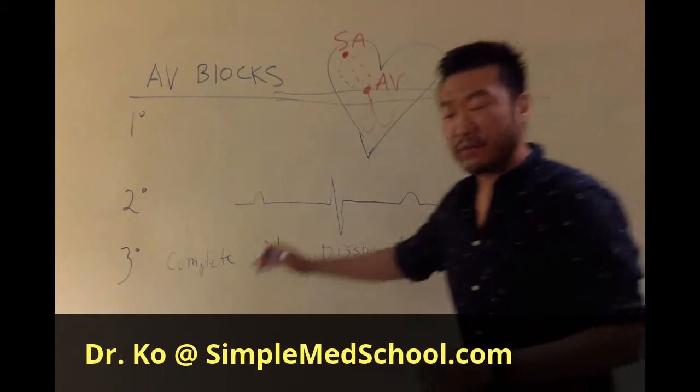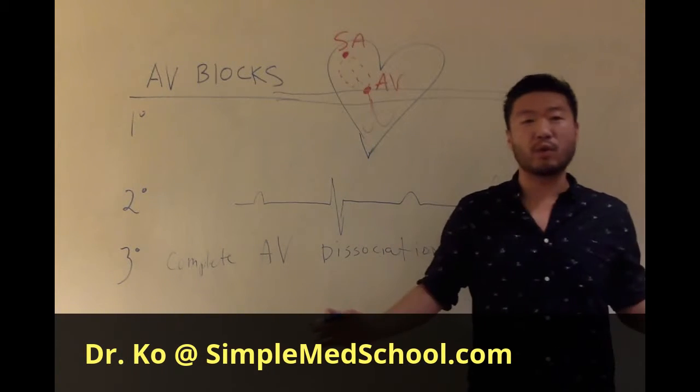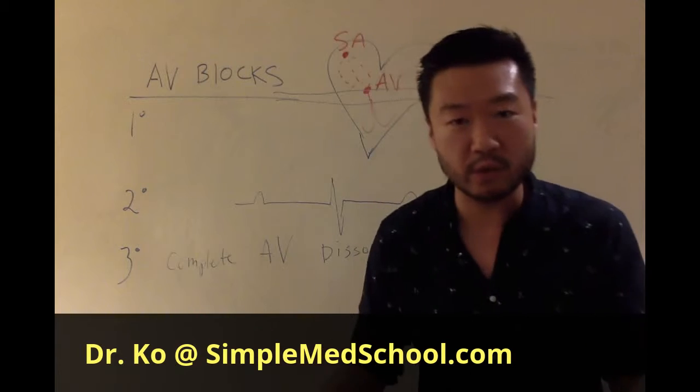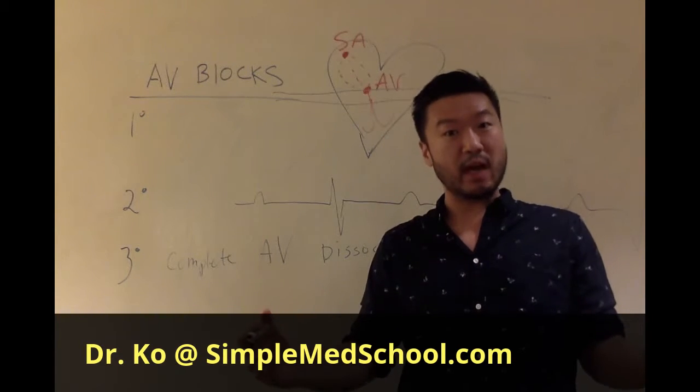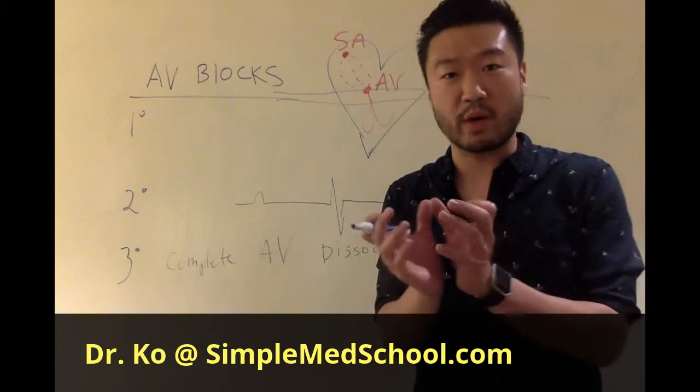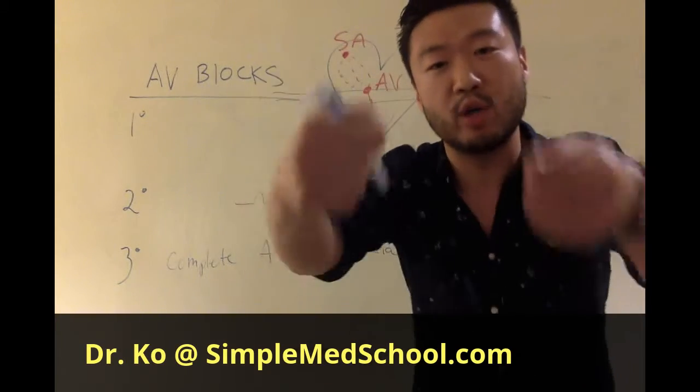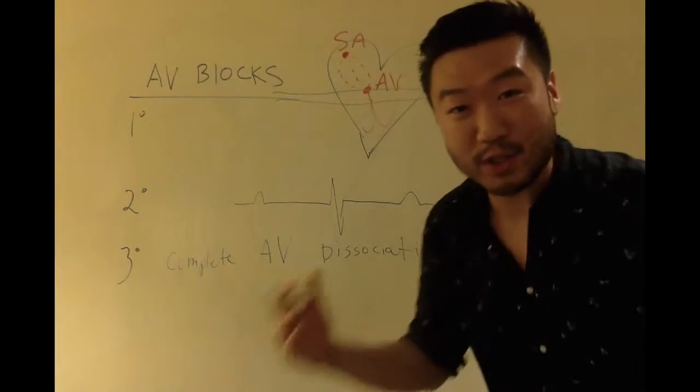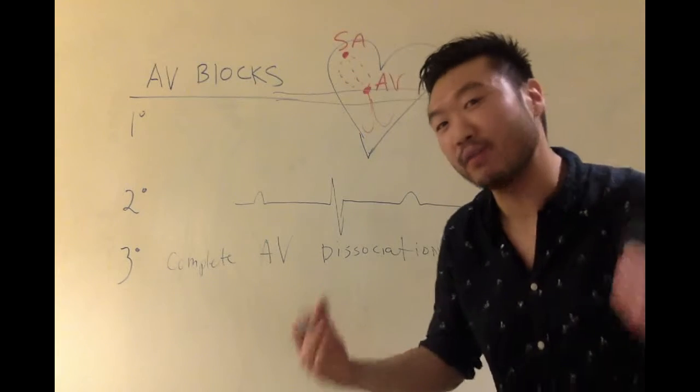Why? Because if the atria and the ventricle are doing their own thing, this can again result in V-fib. And remember, we talked about V-fib. V-fib is where the ventricles are doing their own thing, they're going crazy, and you've got to shock them. So there's a block between the atria and the ventricle.